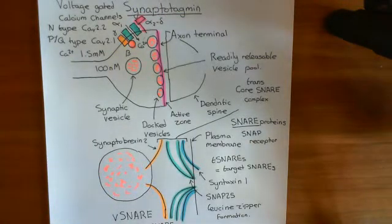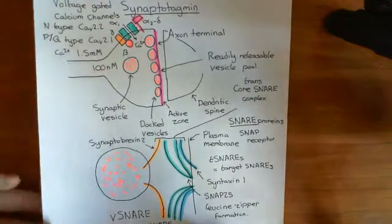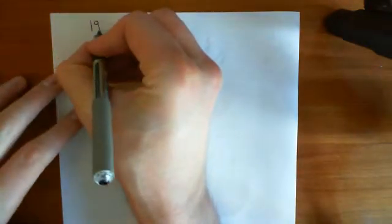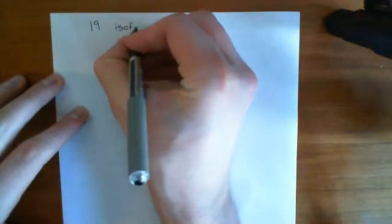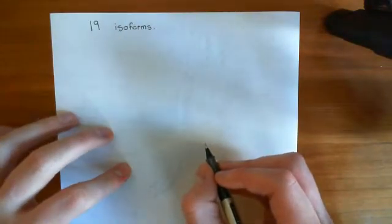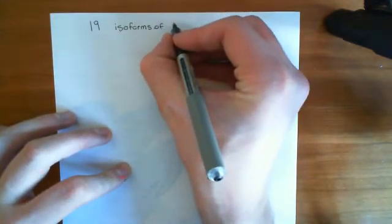Welcome to this next video in which we are discussing synaptotagmin. We've done the setup for this discussion now, and we're going to look at this protein, synaptotagmin. The first thing to say is that there are actually 19 known different isoforms of synaptotagmin — 19 isoforms — even though Wikipedia only seems to think there are 15.